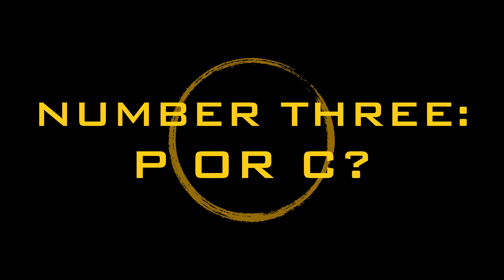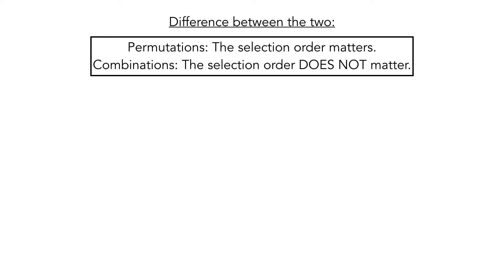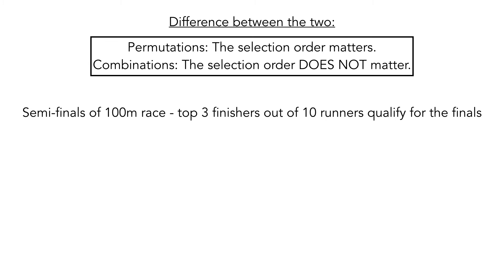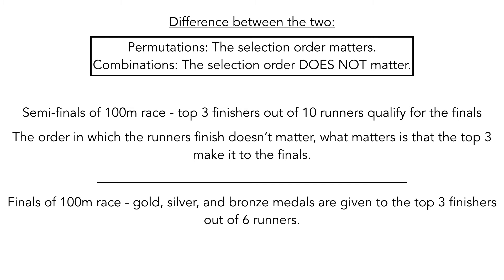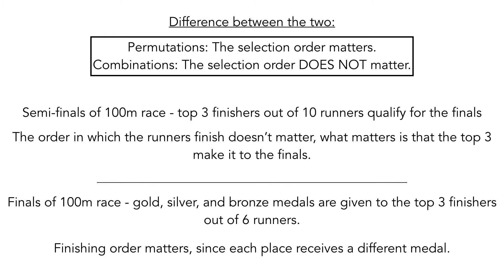The third thing you'll need to know is when to use one over the other. With permutations, the selection order matters, while with combinations the order doesn't matter. For example, in the semi-finals of a 100-meter race, the top three finishers out of 10 runners qualify for the final round — the order of the top three doesn't matter, so we'd use combinations. In the finals, the first, second, and third place finishers out of six runners get gold, silver, and bronze medals. The finishing order matters since each place gets a different medal, so we'd use permutations.